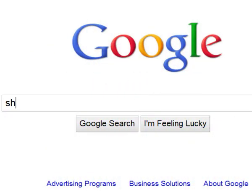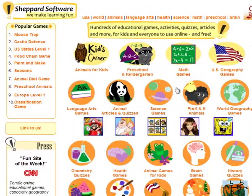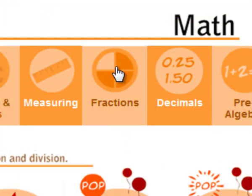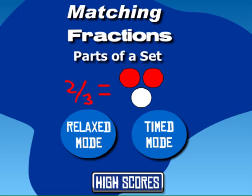Now, just type Shep into your favorite search engine to find shepherdsoftware.com. Click on Math Games, then on Fractions, and then on Fractions Sets, and try it for yourself.